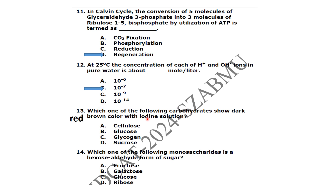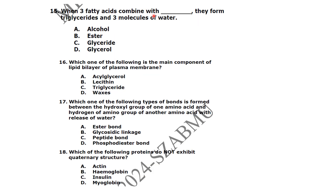Which one of the following carbohydrates shows a dark red color? The answer is the monosaccharide glucose. When three fatty acids combine with a glycerol they form triglycerides and three molecules of water.